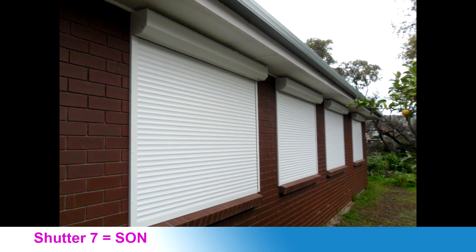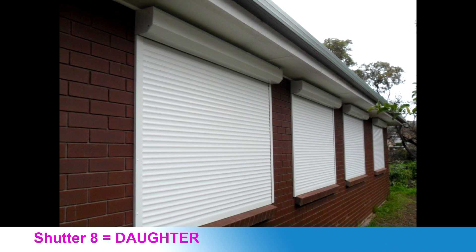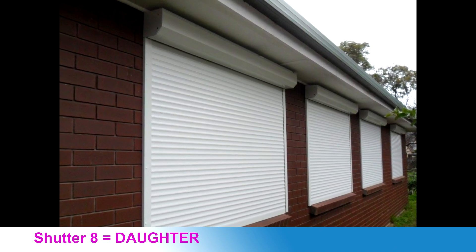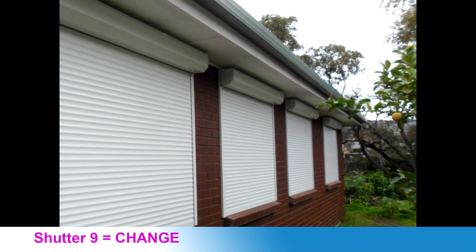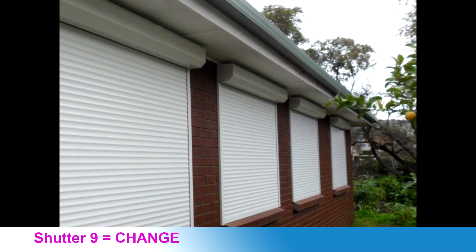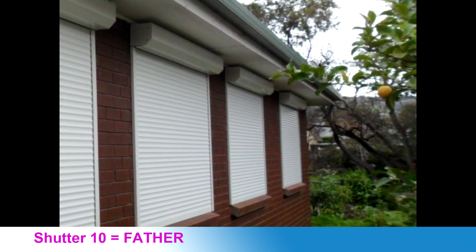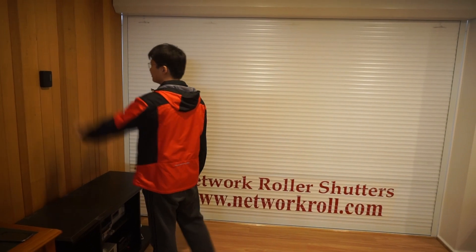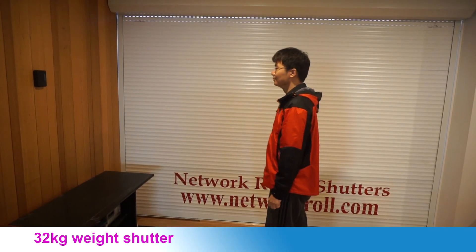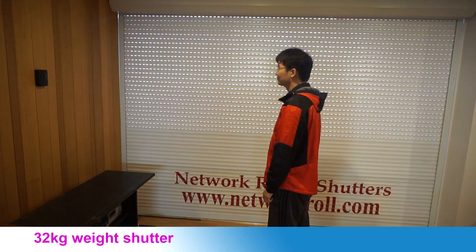Shutter 7 is installed in the son's room, shutter 8 in the daughter's room, shutter 9 in the change room, shutter 10 in the father's room, and shutter 1 in the lounge. Total weight is 32 kg.